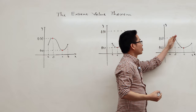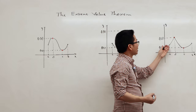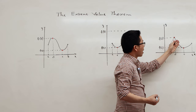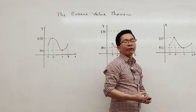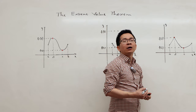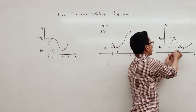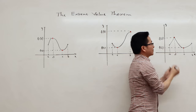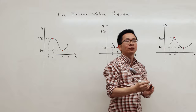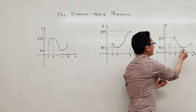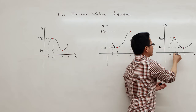And in the third figure, this is the graph of a continuous function on the closed interval ab. Notice that this function is continuous on the interval ab, but f is not differentiable at d. We also see that f has an absolute minimum at c, and f has an absolute maximum at d.